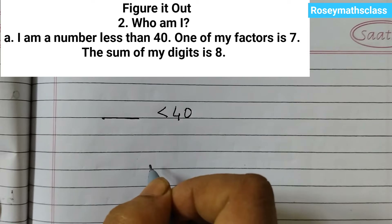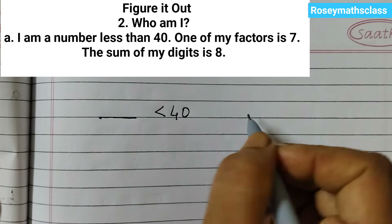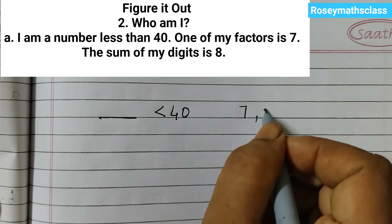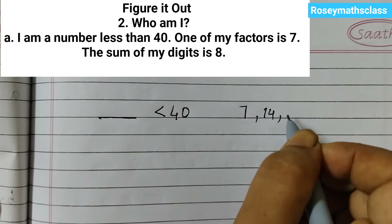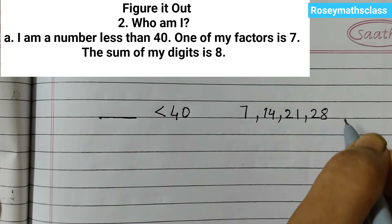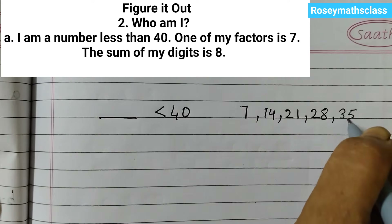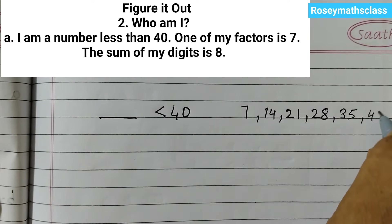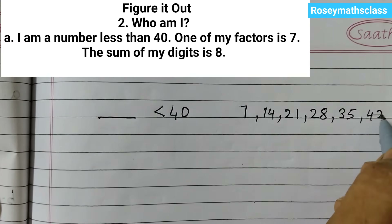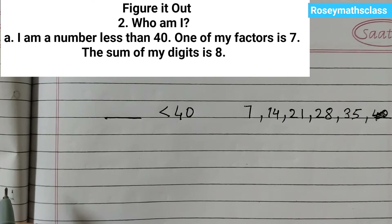One of my factors is 7. So if the factors are 7, that means the multiples would be: 7×1=7, 7×2=14, 7×3=21, 7×4=28, 7×5=35, and 7×6=42. We don't need 42 because the number is less than 40.